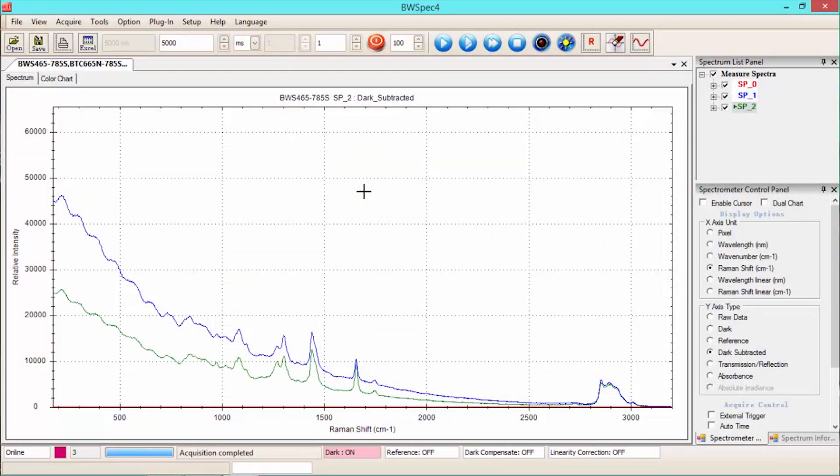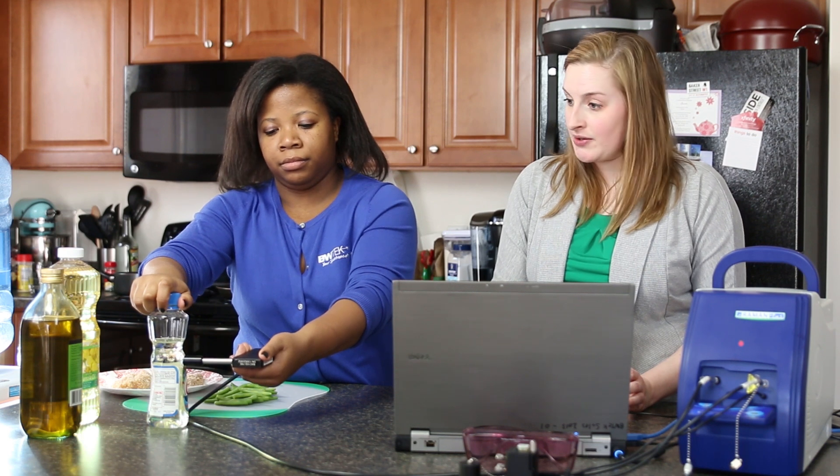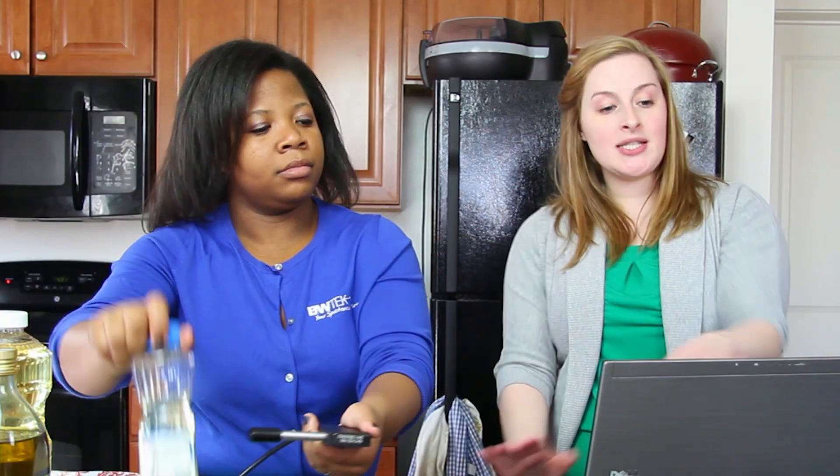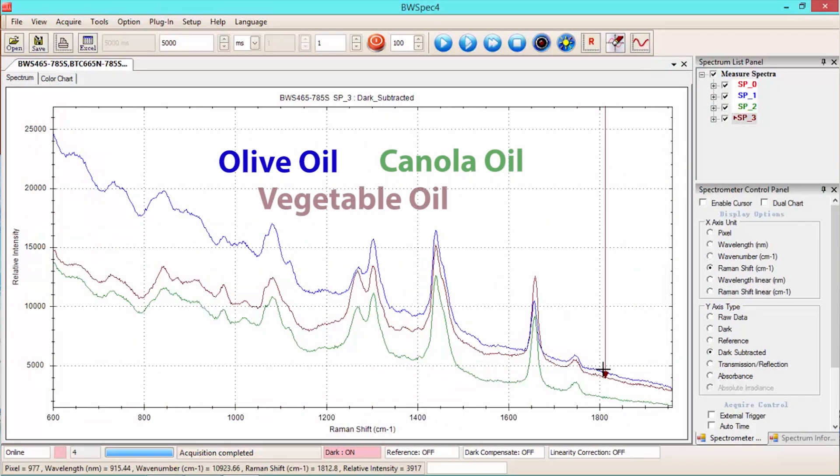And it also works out that Raman can measure through the plastic or the glass bottles, so it's really easy to do. Okay, and as you can see, the three spectra overlaid here, and they're very similar because they're all vegetable oils, but they're a little bit different because each one has a little bit different concentration than the others of the different ingredients that we talked about.